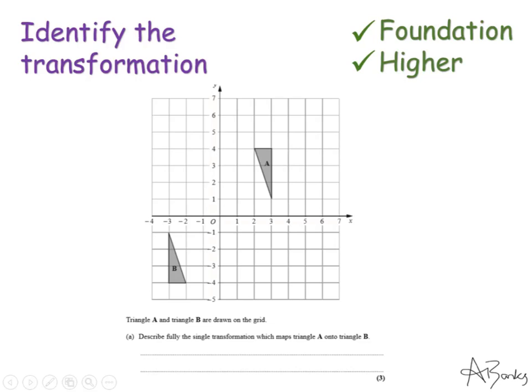Here's the next transformation. The shape hasn't got bigger or smaller and it's not just been moved — it's actually been turned around. Using tracing paper we can tell it's a rotation, so I'll write 'rotation' first. You can't just say it's been turned; you have to use the correct word. For this next part you'll need tracing paper: place it over triangle A, draw around triangle A, and to find the centre you need to pick coordinates and turn the tracing paper to see which point lands shape A onto shape B.